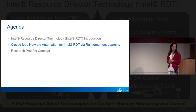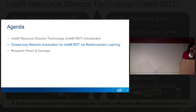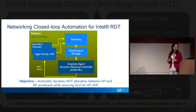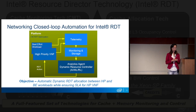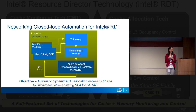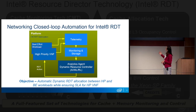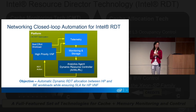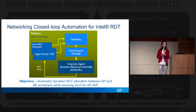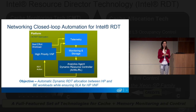I'll now introduce our closed-loop network automation for Intel RDT allocation via the reinforcement learning approach. Our closed-loop automation system dynamically controls RDT allocation between high-priority VNFs and best-effort workloads using reinforcement learning. There are multiple applications running on the platform — some are high-priority, latency-sensitive, customer-facing workloads such as packet processing, and there are also best-effort workloads that utilize any unused resources to improve server utilization. We run those workloads simultaneously on the platform.